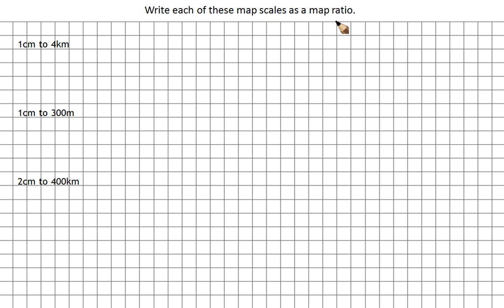Ratios don't have units in them. So in order to change these into ratios we've got to get rid of the units. We can't just write this as 1 to 4 because it's 1 cm and 4 km — they're two different measurements. So the first thing we do is change them all to the same measurement.